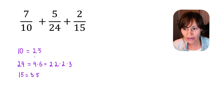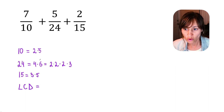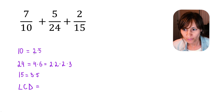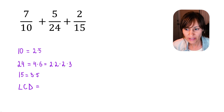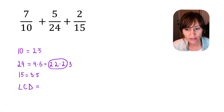We wrote each denominator as a product of prime factors. Now, to find the LCD, we are going to look at each prime factor and write it down with its most occurrence in any number. Let's start with 2. 2 shows up in 10 once, 2 shows up in 24 three times, and 2 shows up in 15 zero times. So it shows up 3 times in 24, and that's the most. In the LCD, we will write down 2 three times.